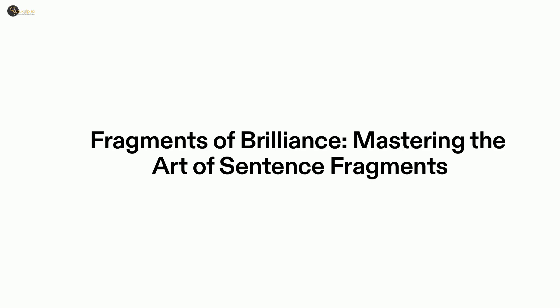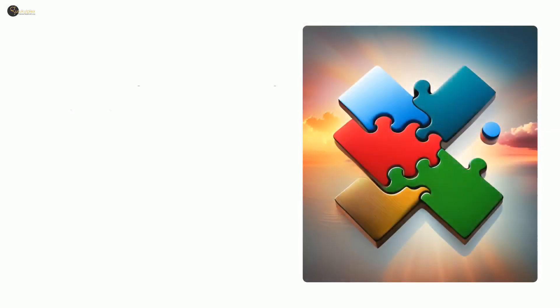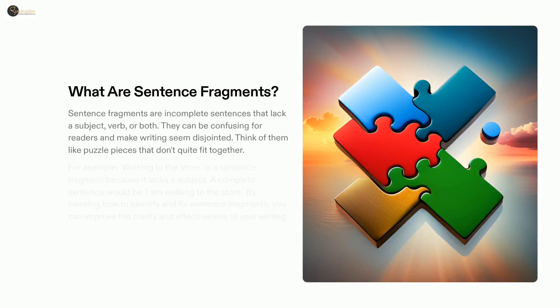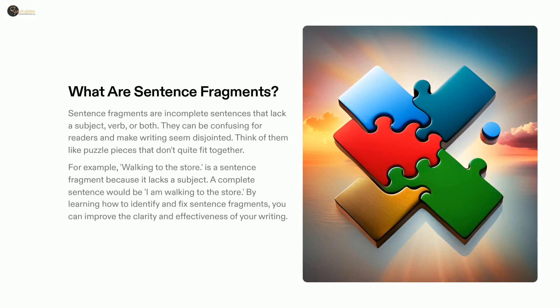So, let us begin. Fragments of writing that lack a subject, verb, or both can cause a confusing or disconnected message. To fix them, search for pieces that don't fit and add the subject and/or verb to create a complete sentence. This can help make your writing clearer and more effective.